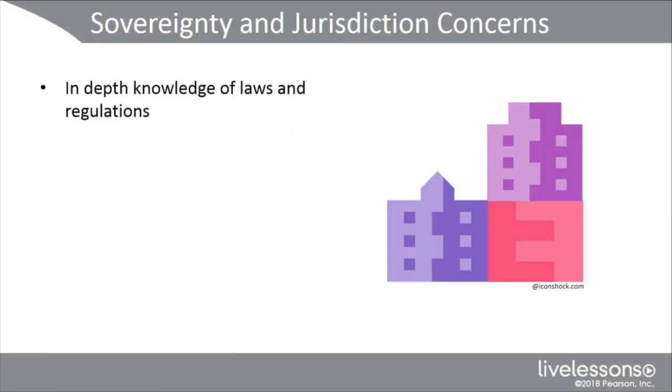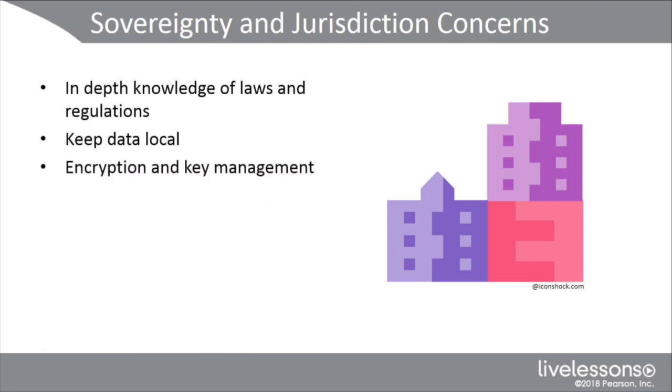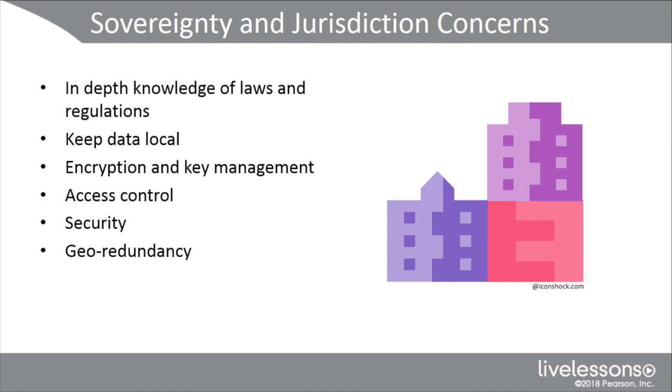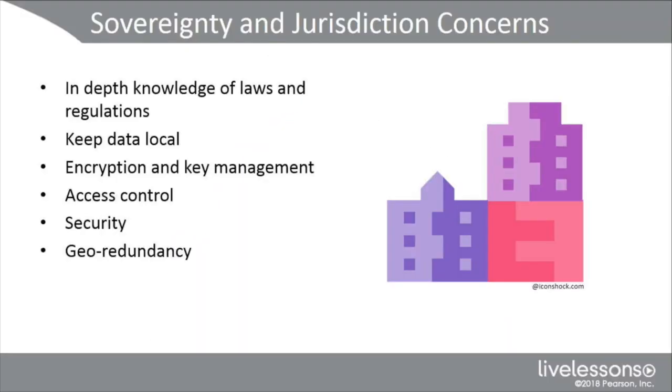We need to have in-depth knowledge of laws and regulations. We need to keep our data local. We need encryption management, key management, and awareness of the limitations of cryptographic exports. We need to think about access controls that are remote and cross boundaries, and consider our different security and privacy issues. Geo-redundancy is important — if we're doing international business, are we going to have multiple copies replicated in multiple areas? Think about how Google and Amazon Web Services replicate data across continents for high availability and redundancy. Geo-redundancy is a big issue, especially for cloud providers, and we must keep up with constant changes.